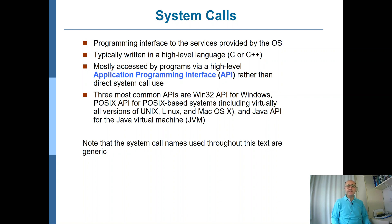For each operating system there is a different API. In Windows it's the Win32 API. For POSIX-based systems — all Unix and Linux variants, and also Mac OS X, which is a BSD variant — we have the POSIX API. And there is the Java API for the Java Virtual Machine (JVM).